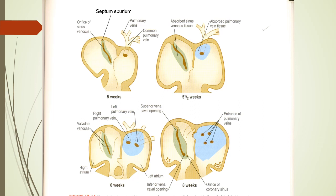Here you can see the septum spurium, which is formed by the fused right and left sinus venosus valves. This is the orifice of the sinus venosus guarded by those valves. These diagrams show the absorption of the right horn of the sinus venosus into the posterior wall of the right atrium, and also the absorption of the pulmonary veins into the wall of the left atrium, which we will discuss later.